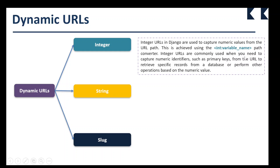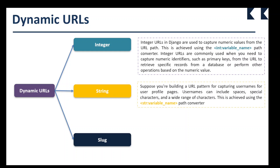Integer URLs are commonly used when you need to capture numerical identifiers, such as a primary key, from the URL to retrieve a specific record from a database or perform other operations based on the numerical value. For the string type, suppose you are building a URL pattern for capturing a username for a user profiles page — usernames can include spaces.